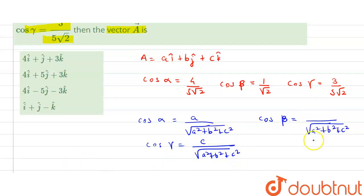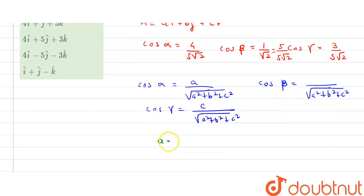Here we can see denominators are the same for all the direction cosines, so we can equate the denominator. This becomes 5/(5√2). So we have a, b, and c: comparing with these equations, a = 4, b = 5, and c = 3.